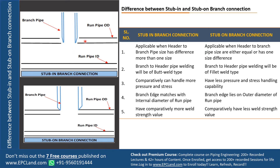The second difference is the branch-to-header welding type. In stub-in, we prepare the edge of the branch pipe with a bevel end, and the welding done is butt weld type — the branch enters the header and the weld fills the joint. At the same time, in stub-on the branch-to-header pipe welding is fillet weld type, where the bevel end of the branch touches the outer surface of the header and the weld is filled there.